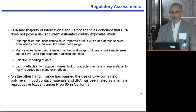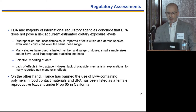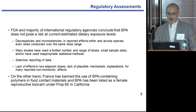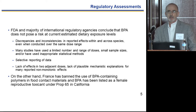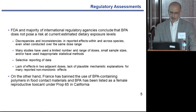FDA and the majority of other international regulatory agencies have concluded that BPA does not pose a risk at current estimated dietary exposure levels. Reviewing the literature, they've pointed out discrepancies and inconsistencies in reported effects within and across species. There have been issues with limited dose ranges, small sample sizes, statistical issues, and selective reporting of positive data, and lack of plausible mechanistic explanations. On the other hand, France has banned BPA-containing polymers in food contact materials, and California has listed BPA as a reproductive toxicant under Prop 65.